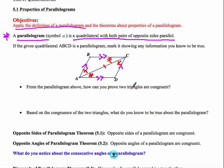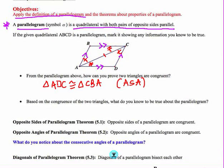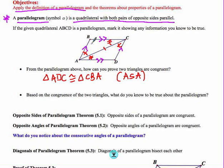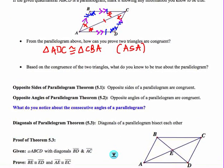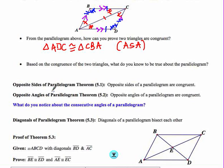We can prove the two triangles — triangle ADC congruent to triangle CBA — via the angle-side-angle postulate. Once we have the congruency of the triangles, this allows us to make additional markings using corresponding parts of congruent triangles. Effectively, what we are doing is highlighting all of the different properties of a parallelogram, which will also be referenced in the theorems below.